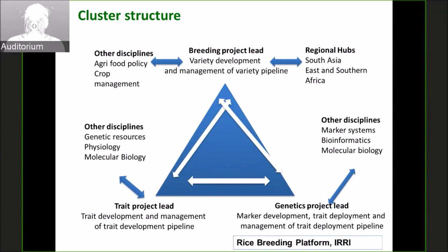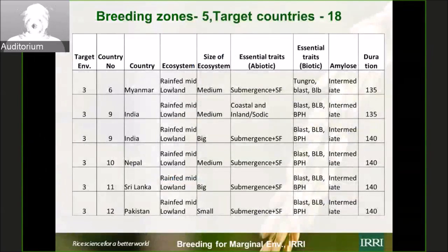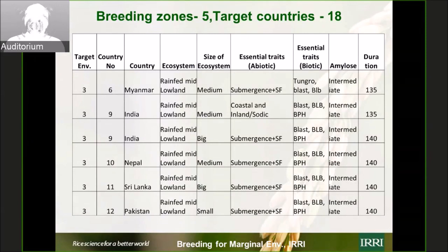We sat down and classified how many countries we breed for — we came up with 18 different countries — and then how many breeding zones we could classify them into — we arrived at five breeding zones. For each breeding zone, you can see the ecosystem, the size of that ecosystem, the biotic stresses needed, the abiotic stresses needed, quality requirements, and duration requirements.